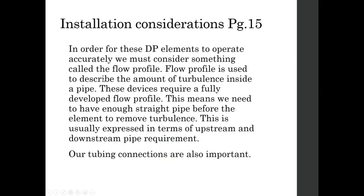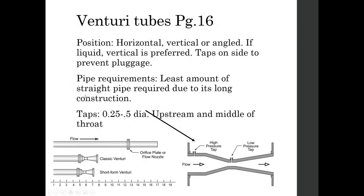Moving on to the next objective — installation considerations for these different flow elements. In order for these elements to operate accurately, we must consider the flow profile, which describes the amount of turbulence inside the pipe. These devices require a fully developed flow profile, meaning we need enough straight pipe before the element to remove turbulence. This is usually expressed in terms of upstream and downstream pipe requirements. Tubing connections are also important — things like reaming out your tubing — a minor detail but can be important in the big picture.